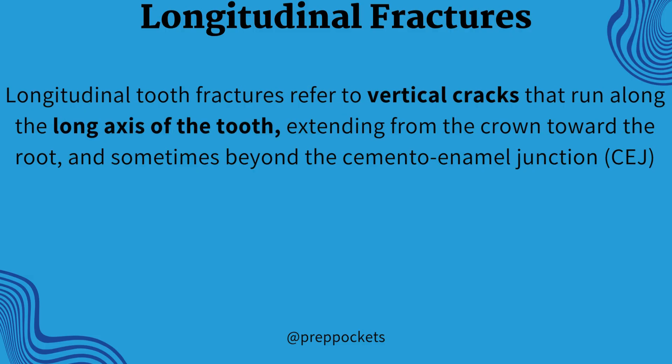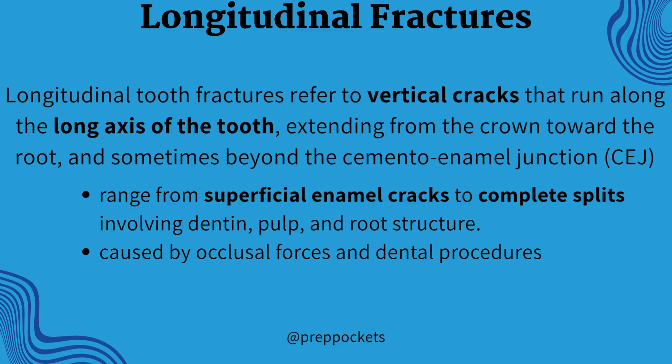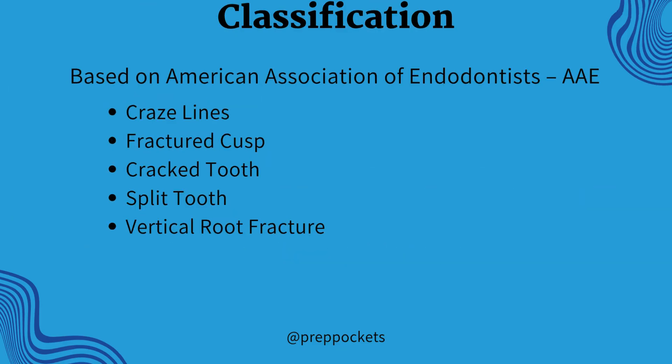Longitudinal tooth fracture refers to vertical cracks that run along the long axis of the tooth. These extend from the crown toward the root, and sometimes beyond the CEJ. According to the American Association of Endodontists, this fracture is classified into five types, ranging from craze lines to vertical root fracture. We will be discussing each type in detail.